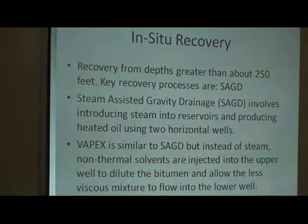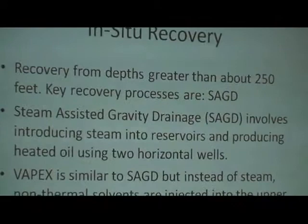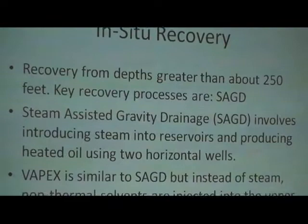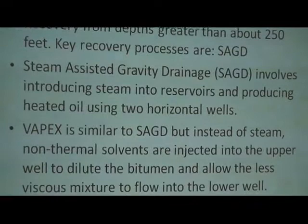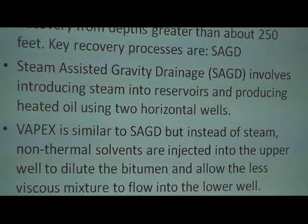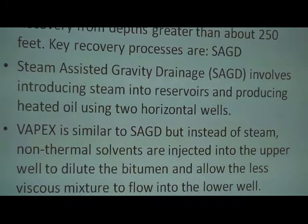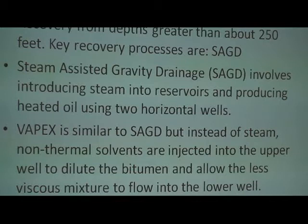Currently, Alberta, Canada — the main producer so far — uses an aqueous-type extraction. At depths greater than 250 feet, where extraction by excavation is not possible, you use what we call in-situ recovery methods — trying to recover the bitumen in place through injection of steam into the formation. What it does is it lightens the bitumen and allows it to flow. The steam-assisted gravity drainage (SAGD) is one of the main methods in this area. Another area under investigation is called VAPEX, similar to SAGD, but uses thermal solvents.